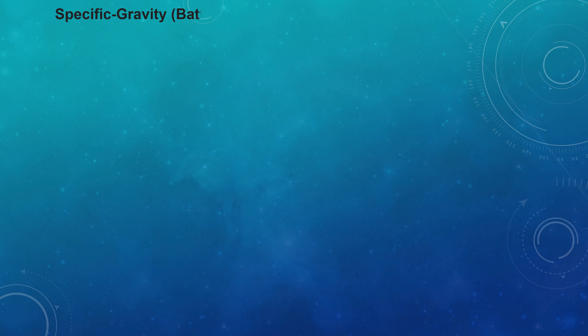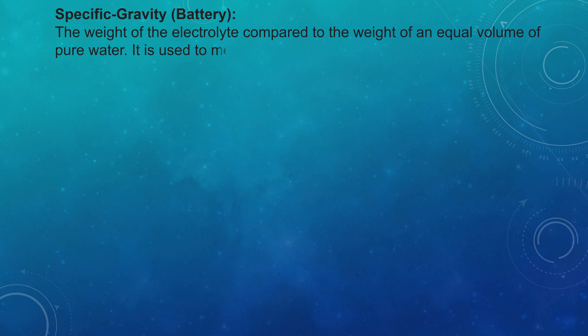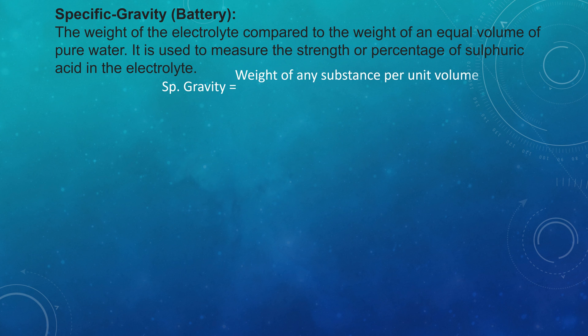Specific gravity: The weight of the electrolyte compared to the weight of an equal volume of pure water. It is used to measure the strength or percentage of sulfuric acid in the electrolyte. Specific gravity equals weight of any substance per unit volume divided by weight of water of equal volume.